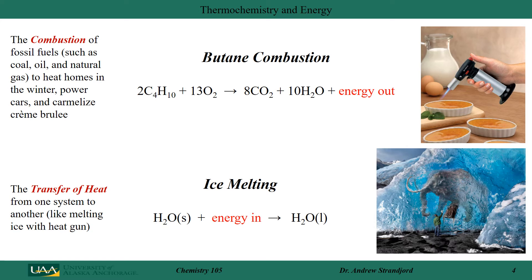Two more examples of thermochemistry involve the transfer or creation of energy. The first is a combustion reaction — specifically the combustion of butane gas, C4H10, which reacts with oxygen in the atmosphere to produce CO2 and water, releasing energy. In this example, most of that energy is in the form of heat, used to caramelize the top of a crème brûlée. We can also see light being emitted, since burning typically produces both heat and light, as in a torch.